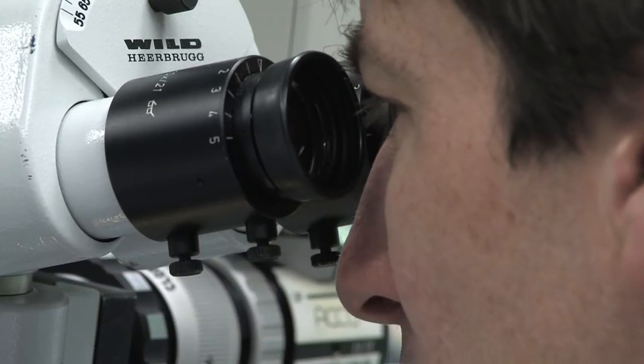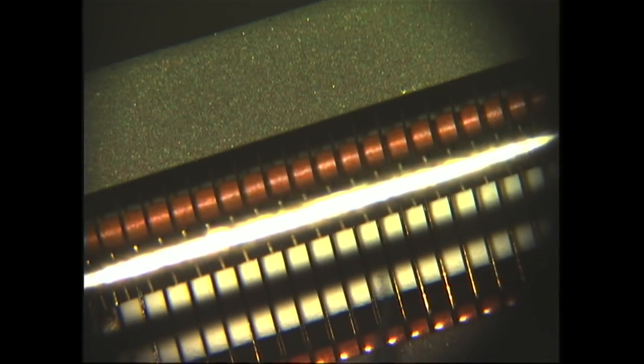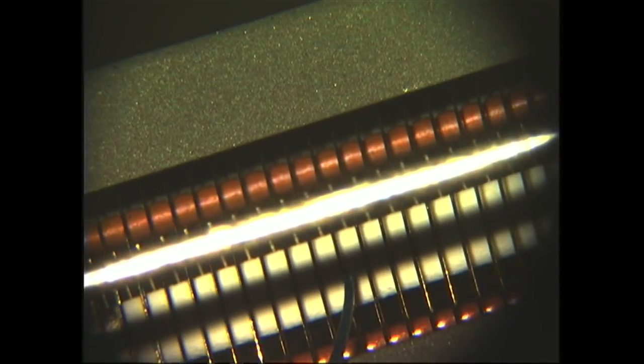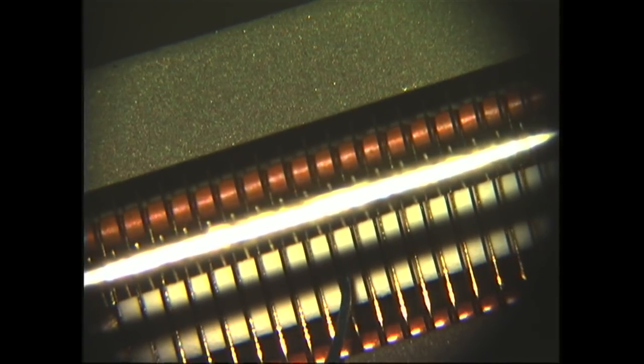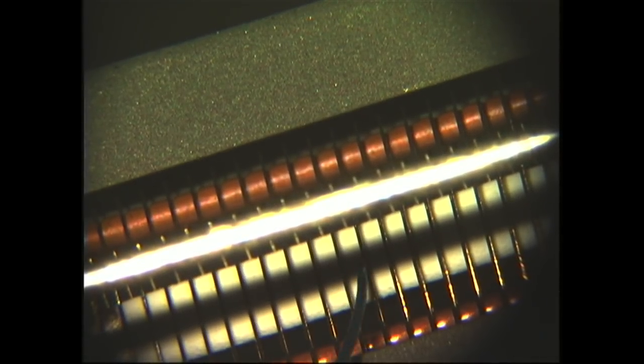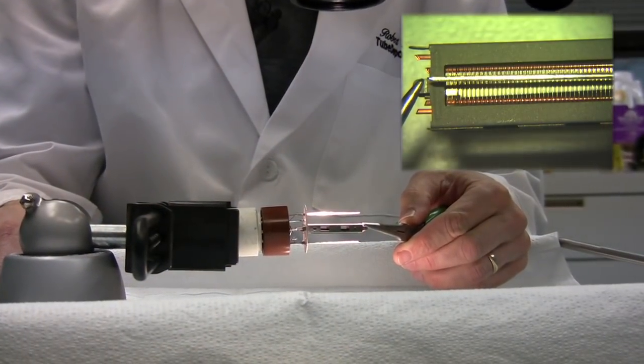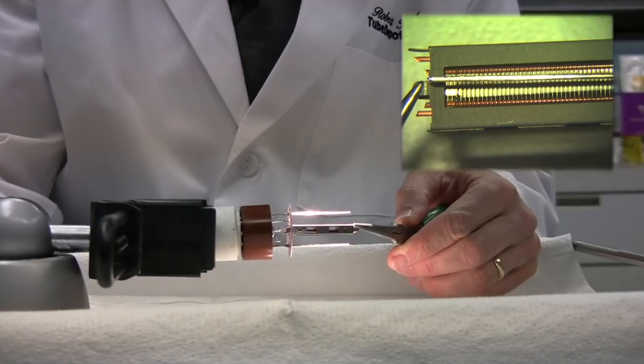I'm going to change the magnification here so we can see all the elements better. Here we can see how the screen grid and control grids are perfectly in line with each other. I'll move the screen grid to show this better. Now I'm ready to remove the beam-forming plate. Once the beam-forming plate is removed, the screen and control grids can easily be seen.